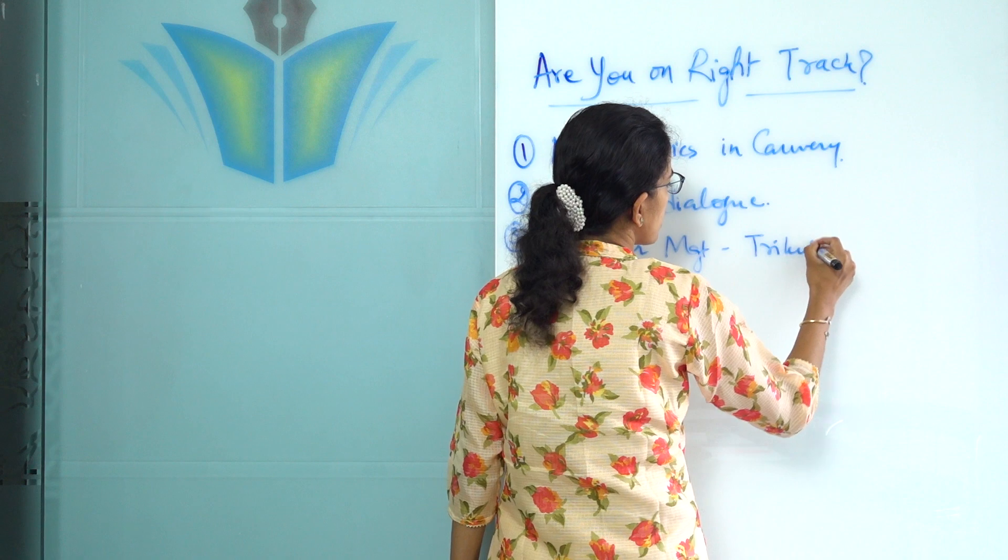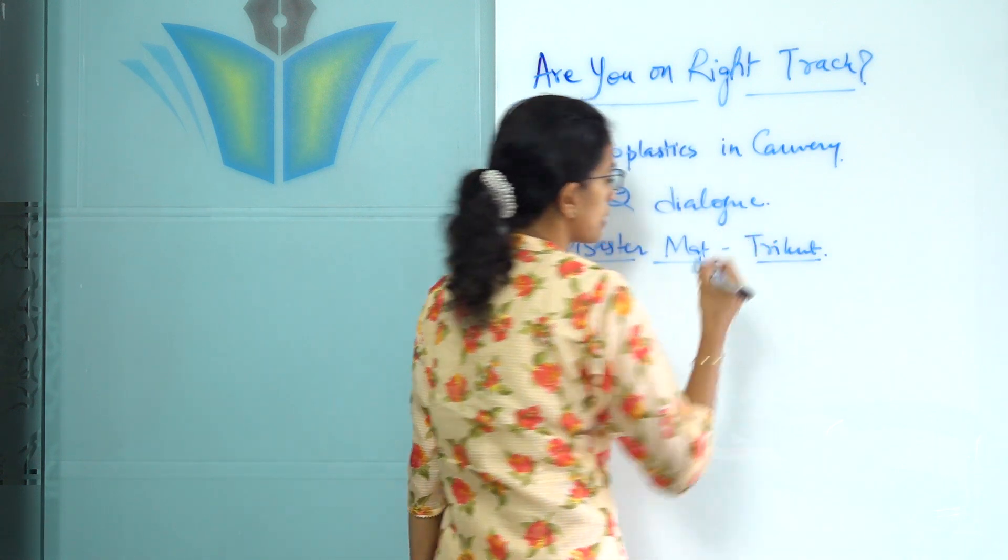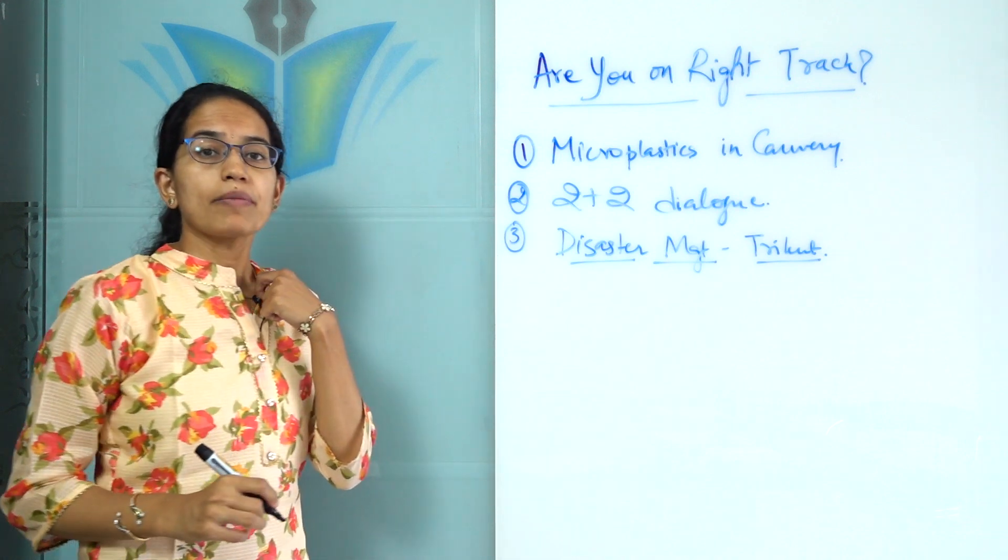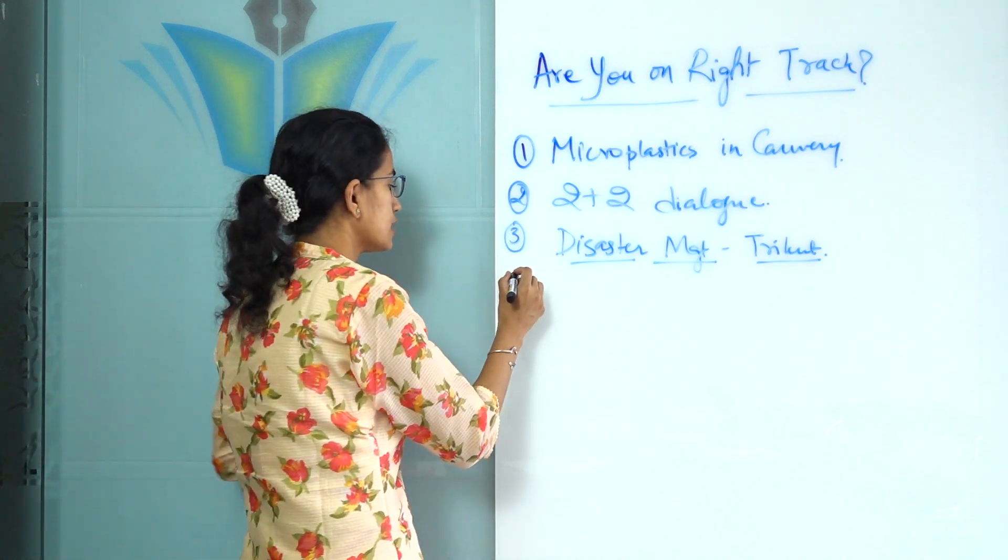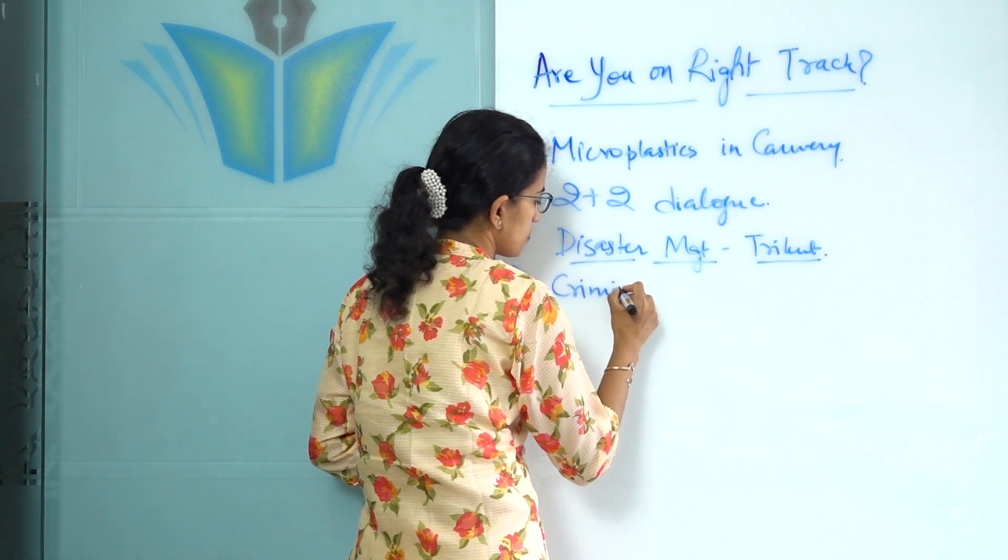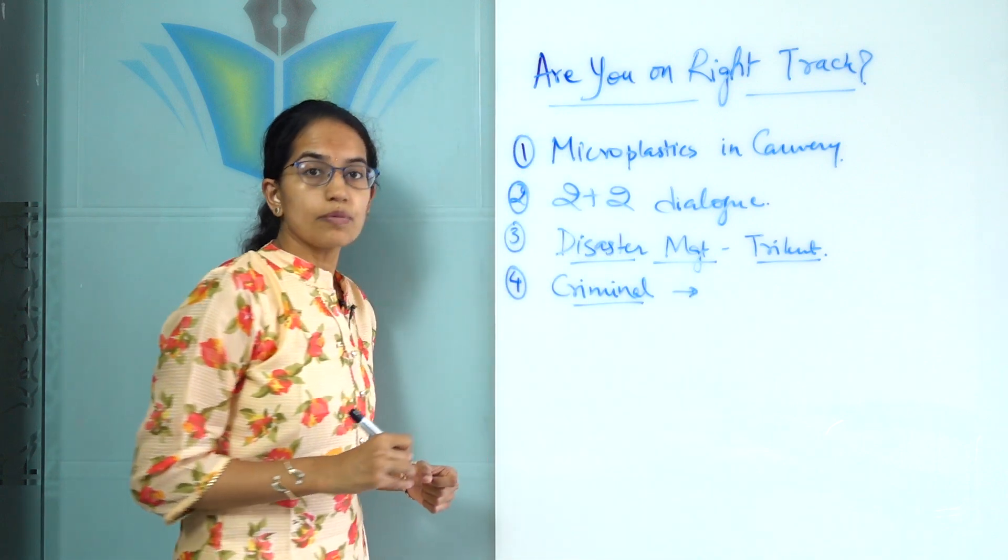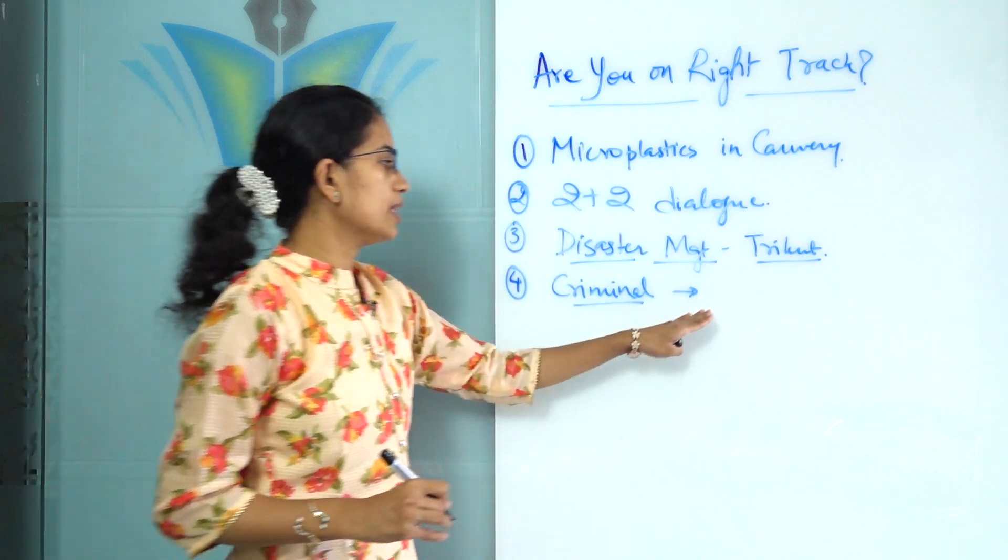The next is understanding the Criminal Procedure Identification Bill. This bill is important in light of its impact on the common people. However, it has been assured that the common people would not be affected unnecessarily because of it.